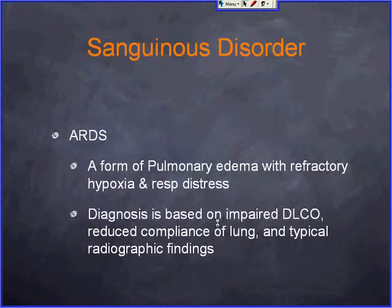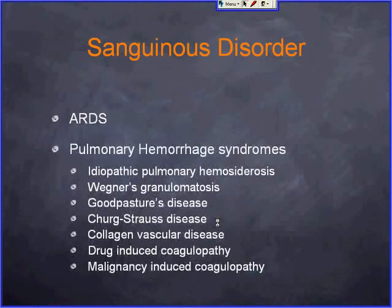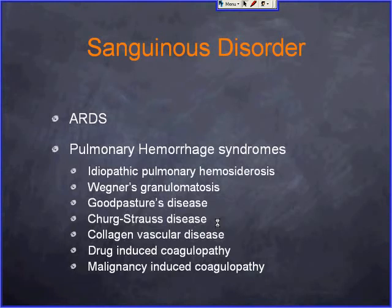In the sanguineous disorders category, ARDS is probably what we see most. The crazy paving pattern is probably seen most commonly in pulmonary edema in everyday practice. ARDS is another form of pulmonary edema with refractory hypoxia and respiratory distress — not a purely radiographic diagnosis, but a combination of radiographic findings, impaired DLCO on PFTs, and reduced lung compliance. Pulmonary hemorrhage syndromes — including Wegener's and Goodpasture's — cause blood leaking into alveolar space, producing ground glass opacity.